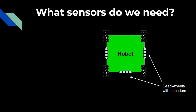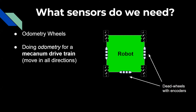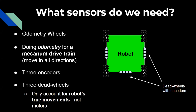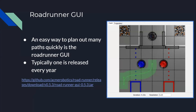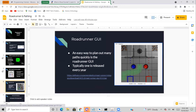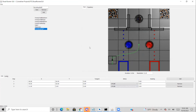To make Roadrunner work we need odometry sensors — three dead wheels on the bottom of the robot that record ticks as the robot moves, allowing the robot to localize on an XY plane of the field. The first big tool you need is the Roadrunner GUI, which is an easy way to plan out many paths quickly. Acme Robotics typically releases one every year, but if they don't, you can always use the old one.